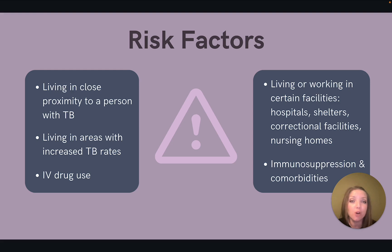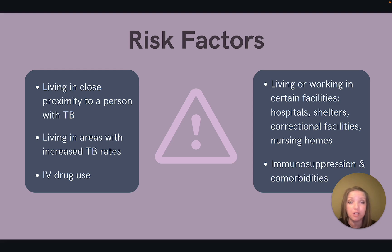Make sure to think about those comorbidities as well. Any condition that weakens the immune system could increase a patient's risk for developing a TB infection. These could include conditions like HIV or AIDS, substance use disorders, diabetes, kidney disease, cancer, autoimmune disorders, or a recent organ transplant. If a patient has any of these comorbidities, we need to factor that into our diagnostic reasoning.